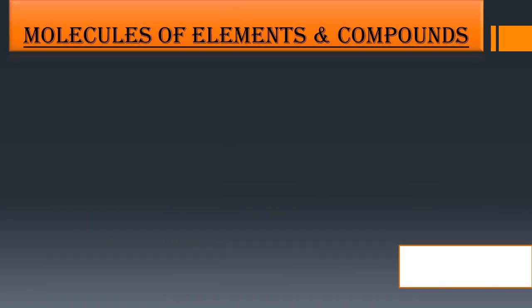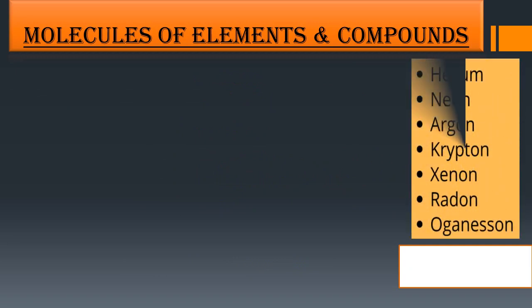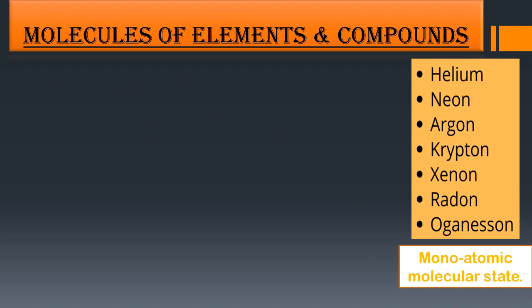Our next topic is molecules of elements and compounds. Atoms of some elements — such as helium, neon, argon, krypton, xenon, and radon — have independent existence. These elements exist in a monoatomic molecular state, meaning they do not combine with another atom. In contrast, water (H₂O) is in a polyatomic molecular state, where many atoms of different elements are combined together.